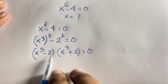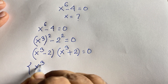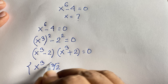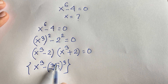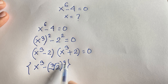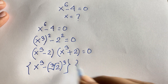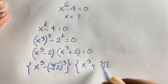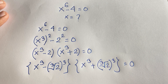Now I can rewrite x³ minus 2 as x³ minus (∛2)³, since cube root of 2 cubed equals 2 — the 3s cancel. Similarly, x³ plus 2 becomes x³ plus (∛2)³ equals 0.